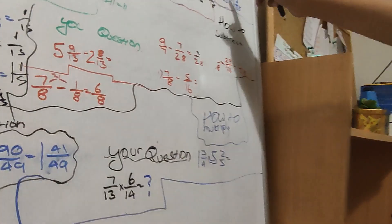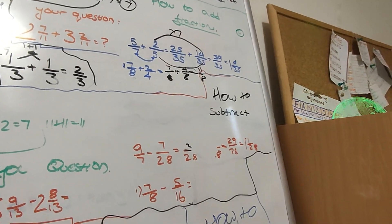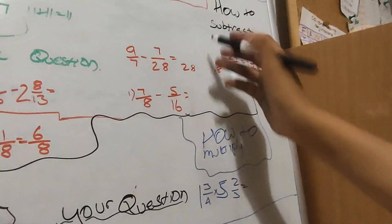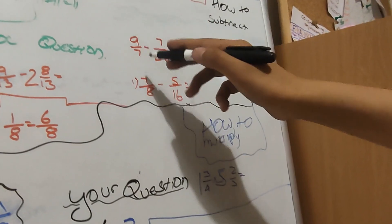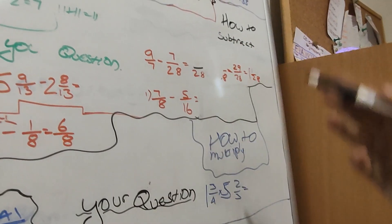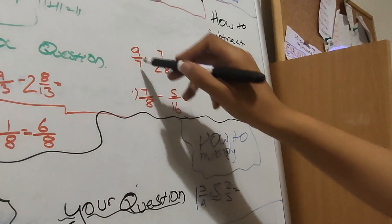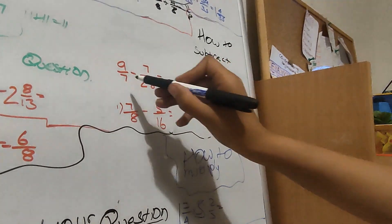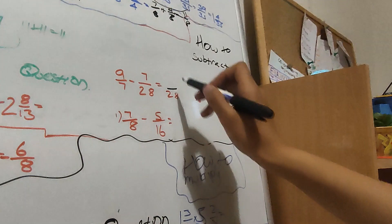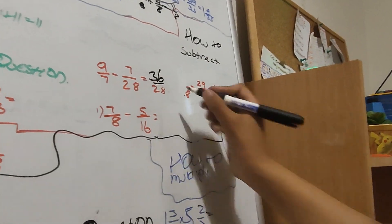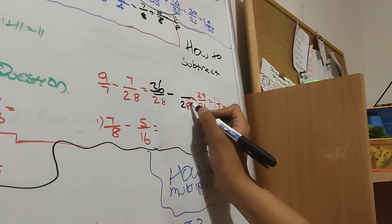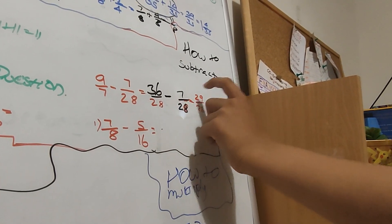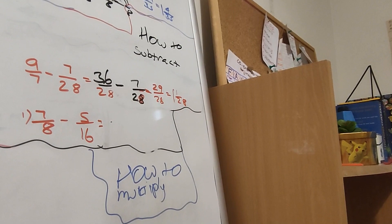Now just like addition, when you have different denominators you need to find a common denominator. So 9/7 take away 7/28 — first we solve it. We know 28 is the common denominator, so we put 28 as our denominator. We times the first numerator by 4, so 9 times 4 is 36. Then do a minus, and 28 times 1 so the second numerator stays as 7. So 36/28 minus 7/28 equals 29/28, which equals 1 whole and 1/28.